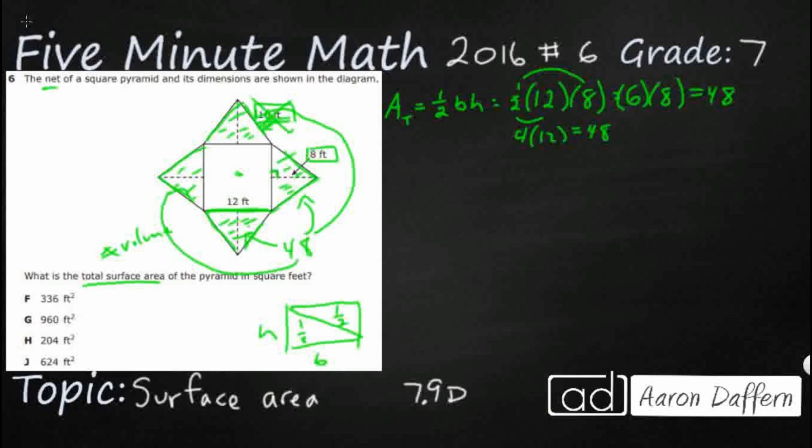So now I need to take my 48 square feet, multiply that by 4 because I have four triangles. And so that's going to be 32, 16, 192.